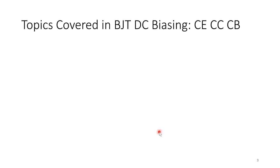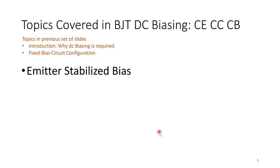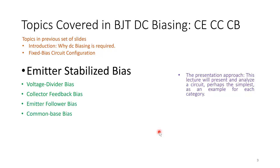The topics in the previous video covered why DC biasing was required and the fixed bias circuit configuration. For today we will look at the emitter stabilized bias, and for the following lectures we will be covering voltage divider bias, collector feedback bias, emitter follower bias, and common base bias.